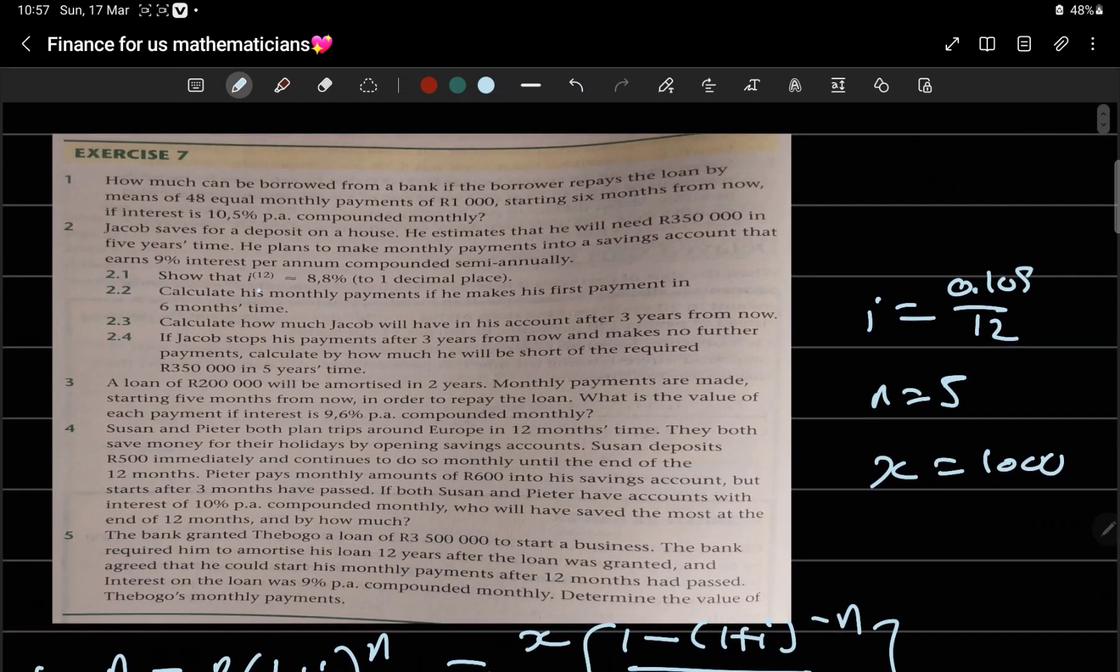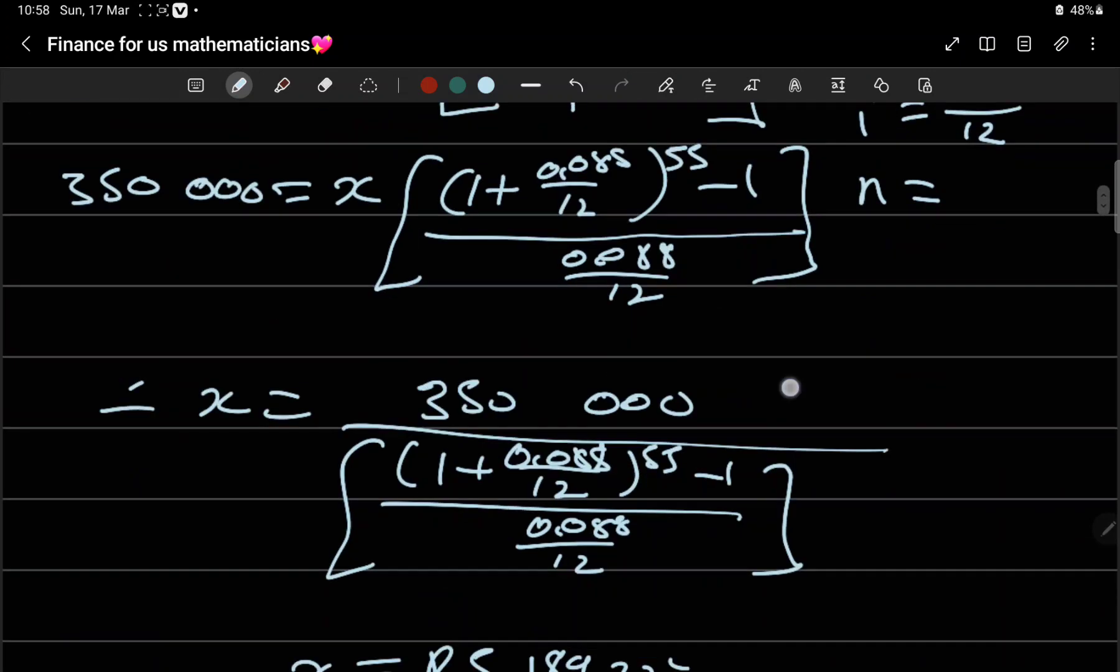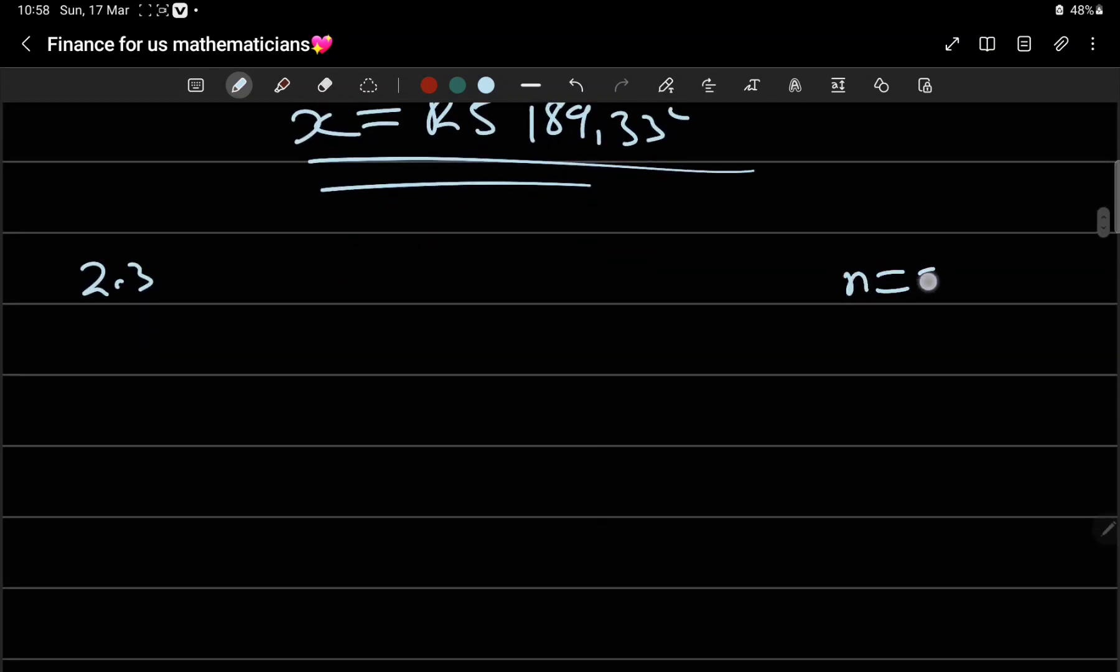Then 2.3: Calculate how much Jacob will have saved in his account after 3 years from now. 3 years means 3 times 12, and we have to subtract the first 5 months, so minus 5, which equals 31. So n is 31. The rest is still the same. The formula: f equals x times [(1 plus i)^n minus 1] over i.